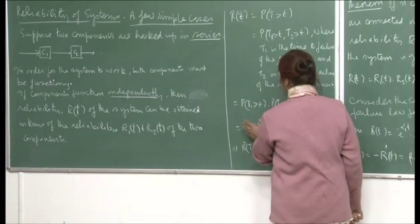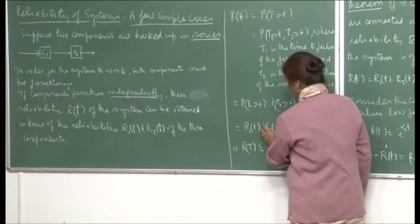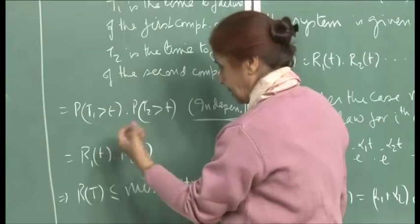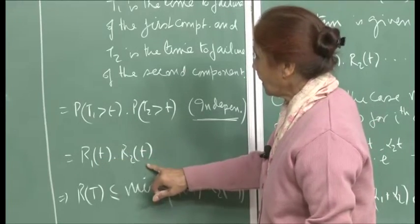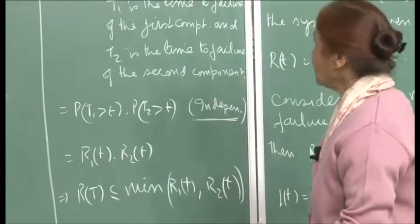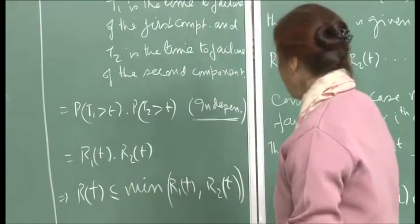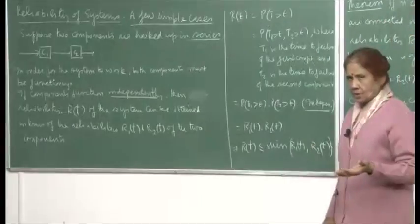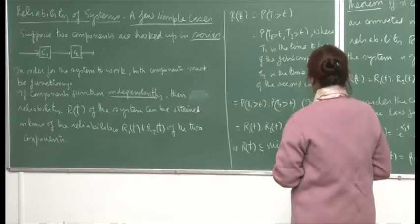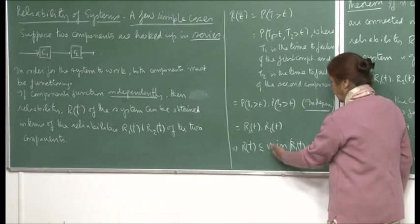Because these are probabilities, each number is less than 1. So the product r1(t) × r2(t) will be less than the smaller of the two. If r2(t) is less than r1(t), then multiplying r2(t) by a number less than 1 gives a product still less than r2(t). So essentially, r(t) is less than or equal to the minimum of r1(t) and r2(t) — the reliability goes down.